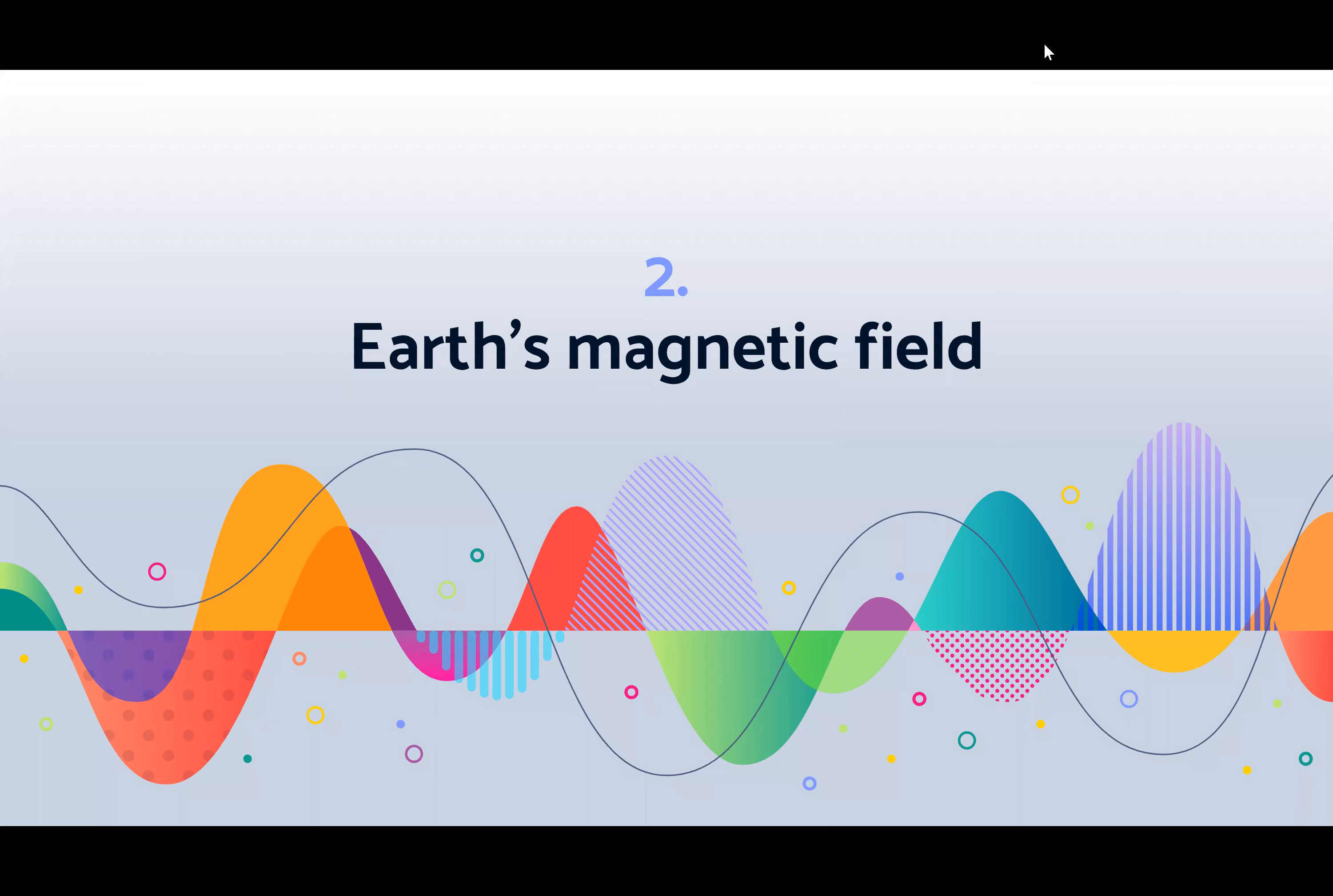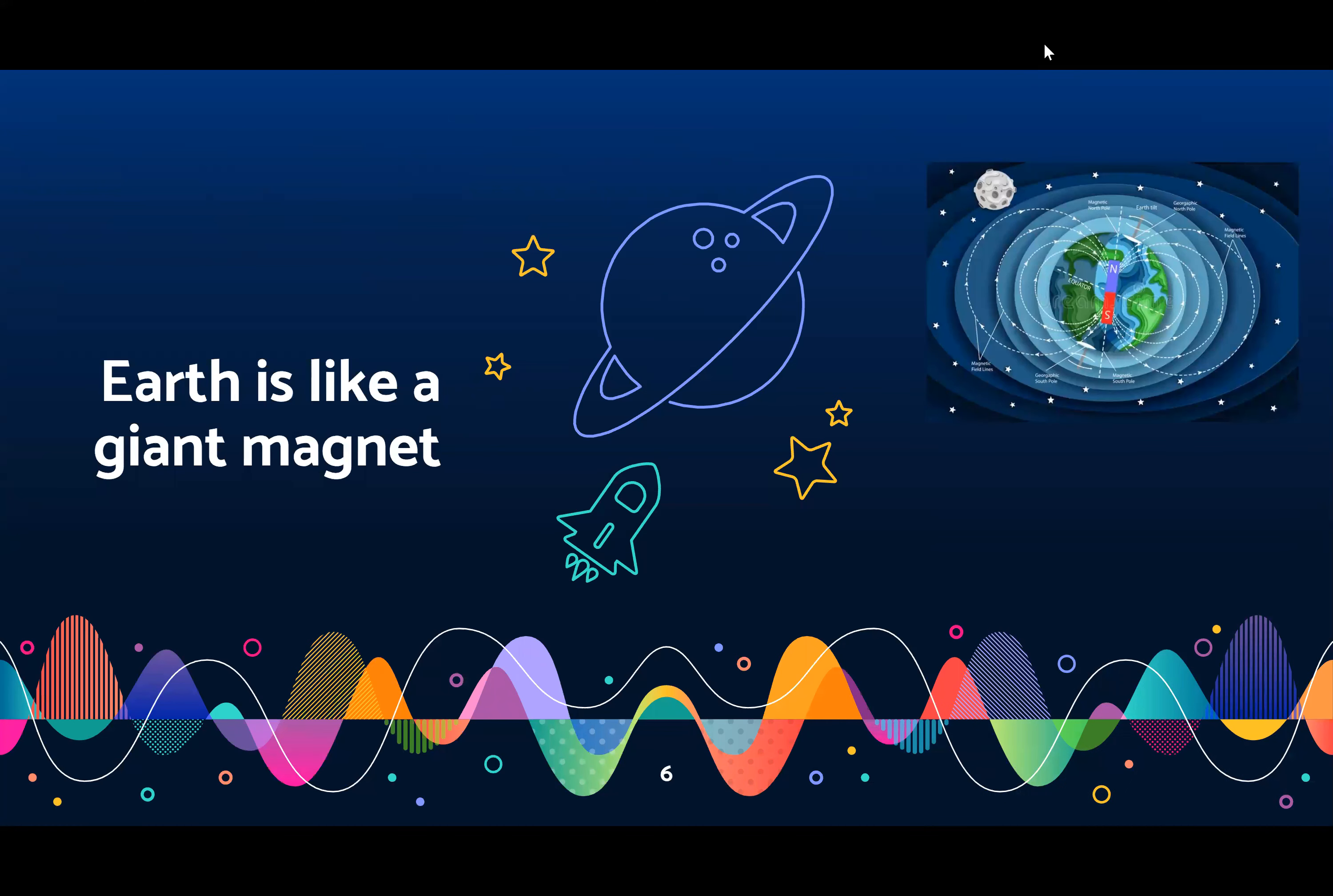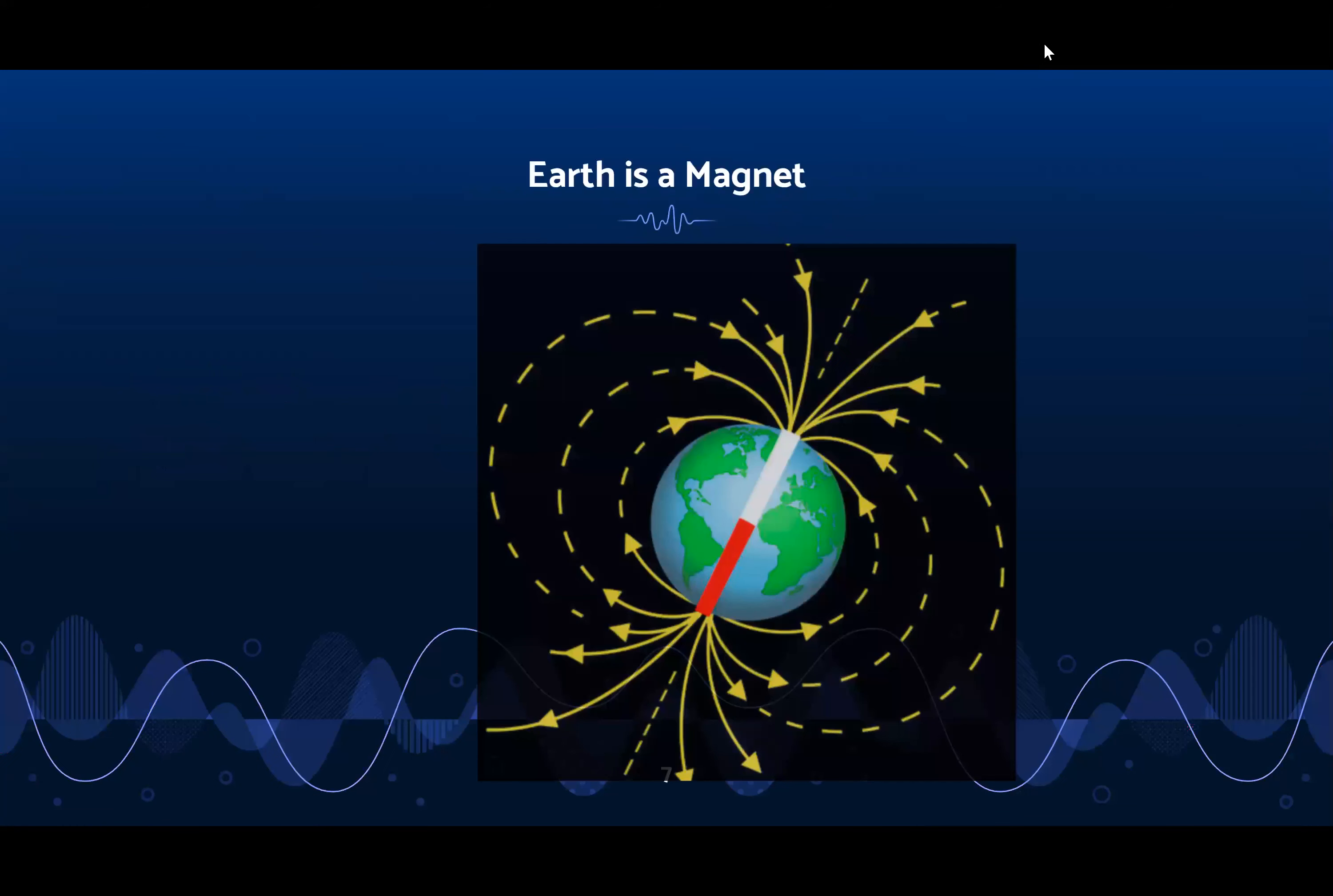Now let's talk about the earth's magnetic field. You could say that the earth is a giant magnet. Have you ever used a compass? Well, the pointer in a compass always points north because earth is a magnet with a north and south pole. So imagine a magnetic bar passing through the middle of the earth with a north pole and a south pole.